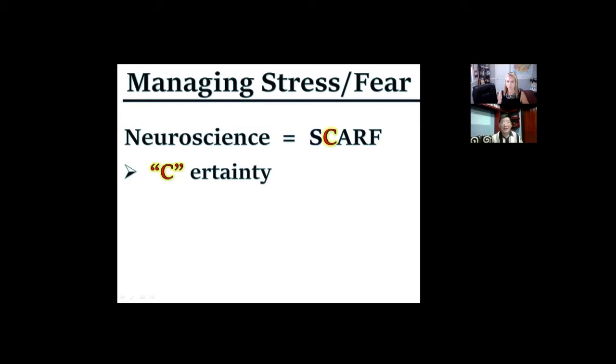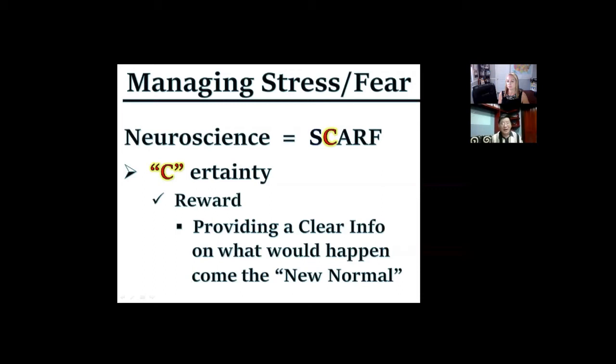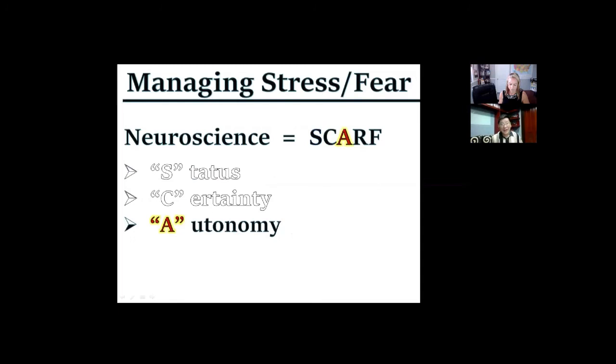A is Autonomy. We want a sense of control. A threat is if you micromanage somebody's work. A reward is if you allow them to do their own thing. R is Relatedness. We want a feeling of belongingness. A threat is if you exclude somebody in a meeting. A reward is if you mentor a subordinate.